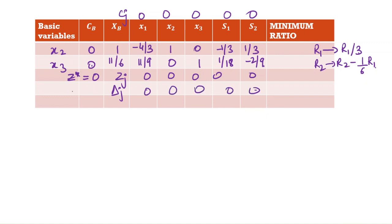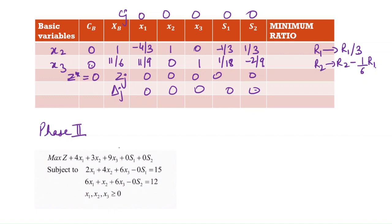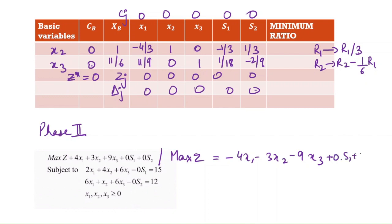Since z-star equals 0 and no artificial variables remain in the basis, we move to Phase 2. In Phase 2 we write the original objective function: maximize Z = -4x1 - 3x2 - 9x3 + 0·s1 + 0·s2. These are the surplus variables and the constraints remain the same.